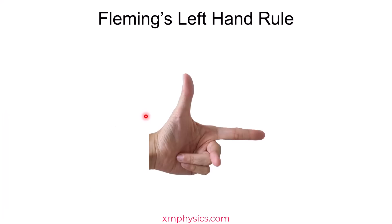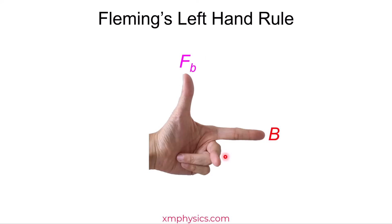What about the direction? For the direction, we need to use Fleming's left hand rule. What you do is make the hand pistol, and your middle finger is the trigger finger. The thumb, the index, and the middle finger are all perpendicular to one another. Point your thumb in the direction of the magnetic force, your index finger in the direction of the magnetic field, and your middle finger in the direction of current. It all comes together nicely — point the hand pistol and shout FBI!